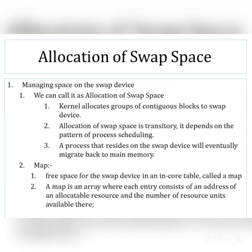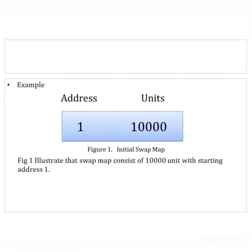There is one more important concept: the map. In this swap space we have the map, which is a free-space tracker for the swap device stored in the in-core table. Basically, this map is an array consisting of the address of the allocatable resource and the total number of resource units available there.